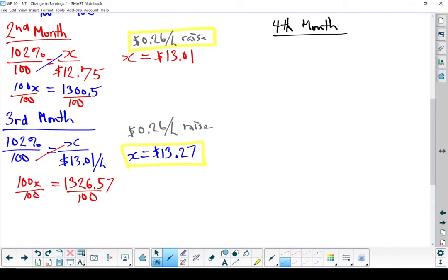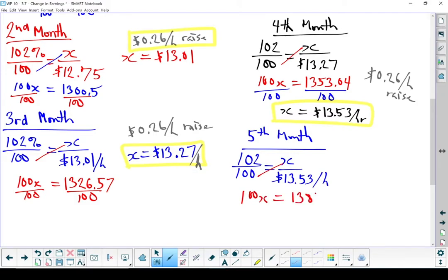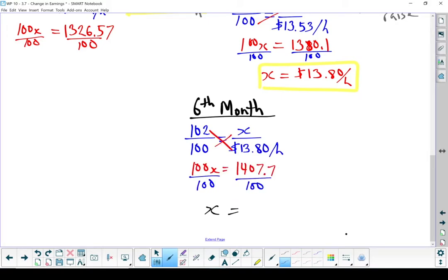I'm going to go through these a little bit faster. You've seen the math on it already. At the end of the fourth month, he ends up getting another 26 cent raise. At the end of the fifth month, he's now making $13.80. That's a 27 cent raise this time. In the last month, the sixth month, in the end, John ends up making $14.08 an hour. This last raise was a 28 cent an hour raise.